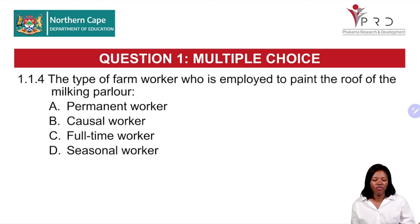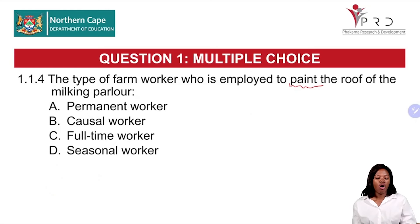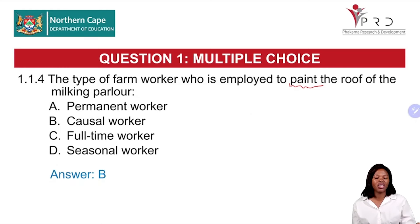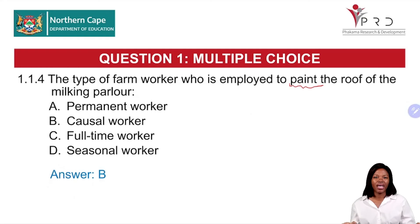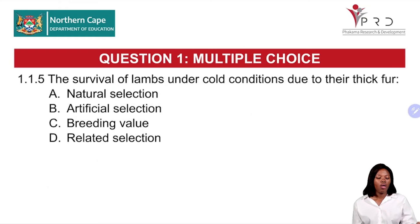Question 1.1.4: The type of farm worker employed to paint the roof of the milking parlor. The keyword here is 'paint the roof of the milking parlor.' The answer is B — the casual worker. Seasonal workers perform repetitive tasks, while casual workers perform non-repetitive tasks. Painting is a non-repetitive task, so it must be performed by casual workers.